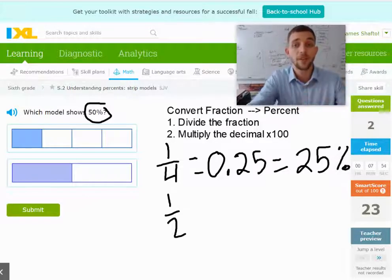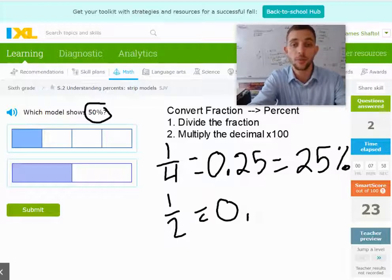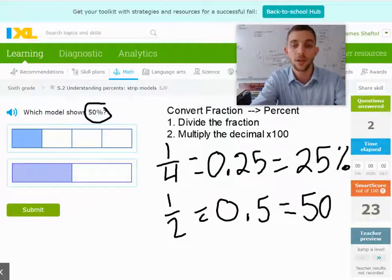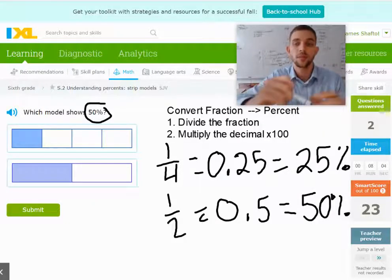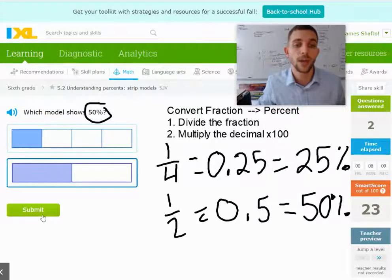And if we took 1 half, this would be 1 divided by 2 would be 0.5, which is equal to 50 percent. And so the correct answer here is going to be the second one, 1 half.